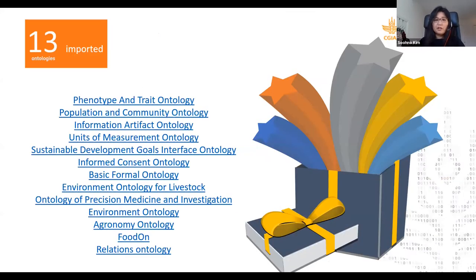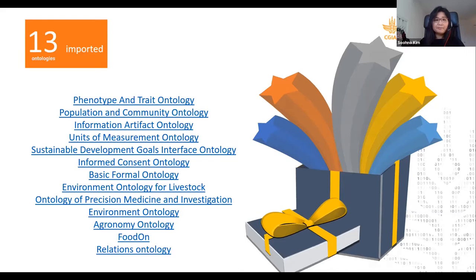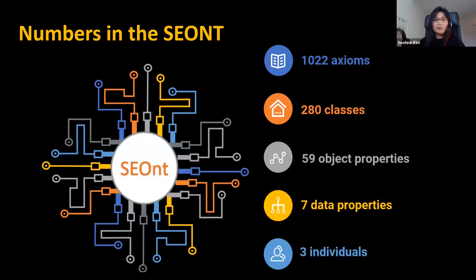We have some gifts from existing communities of ontologies. There are a lot of existing ontologies such as information artifact ontology, informed consent ontology, and food and relationship ontology as well. Those 13 ontologies which are already developed — we are using these ontologies for developing our socio-economic ontology SEANT.